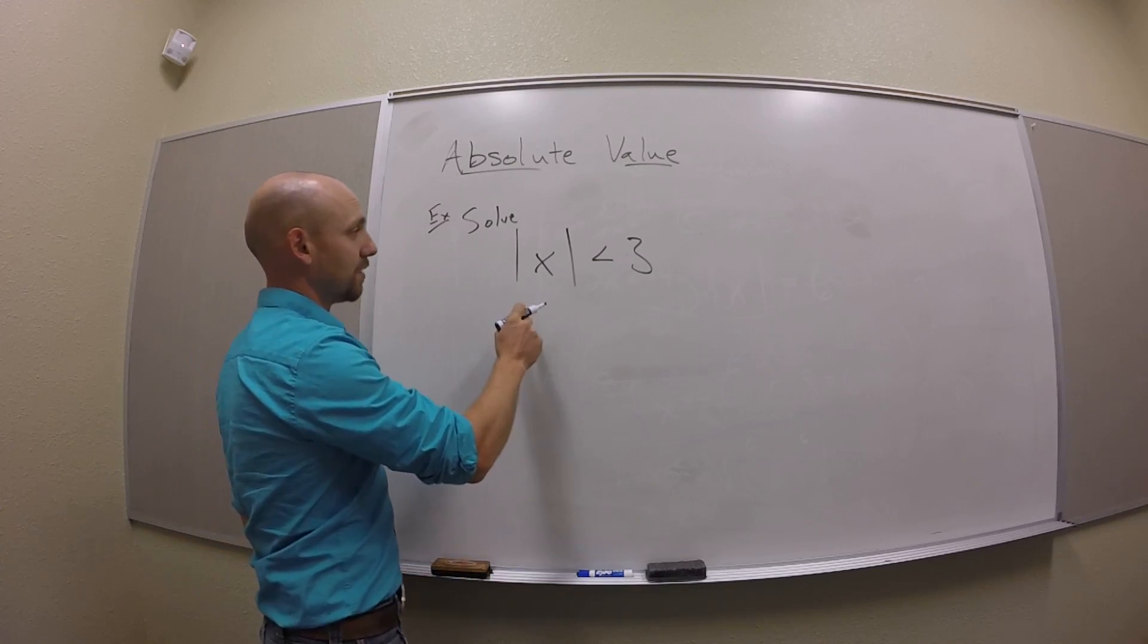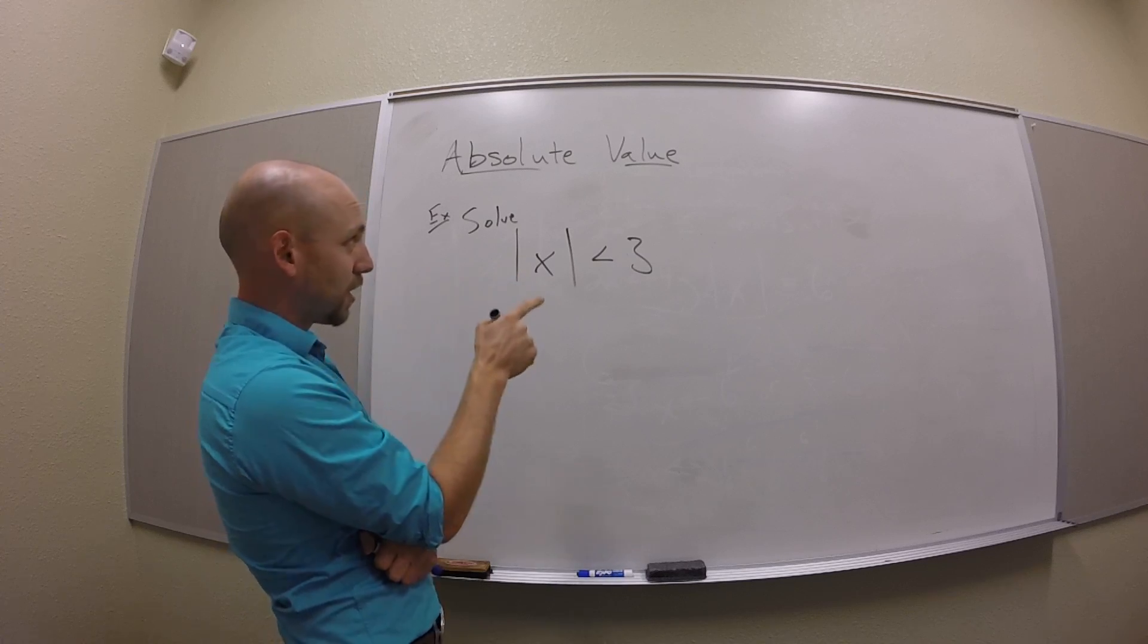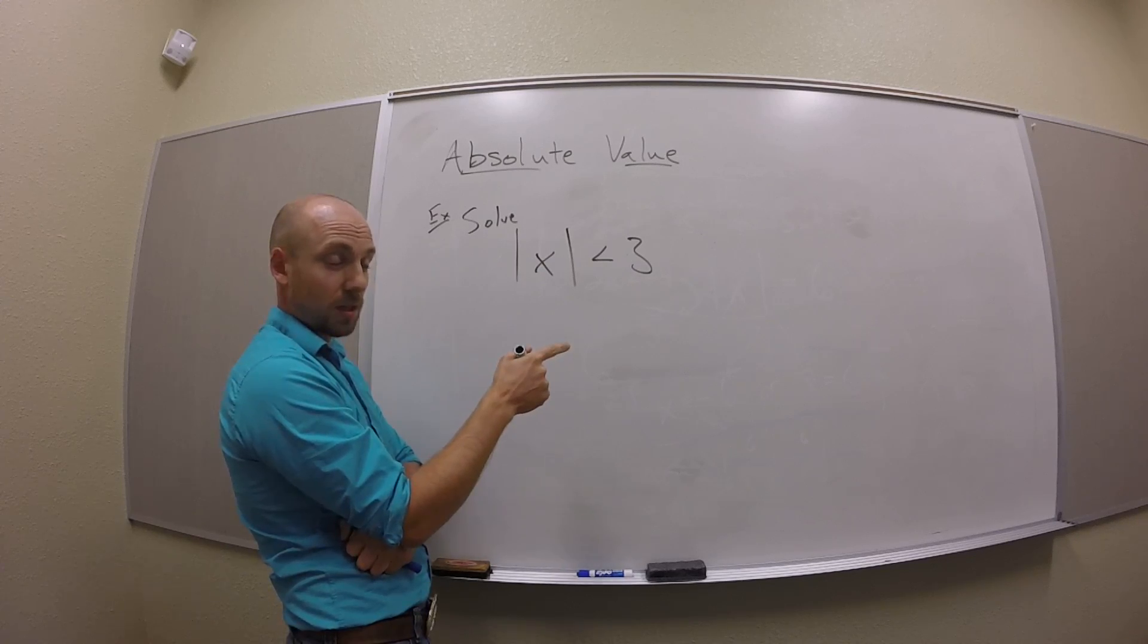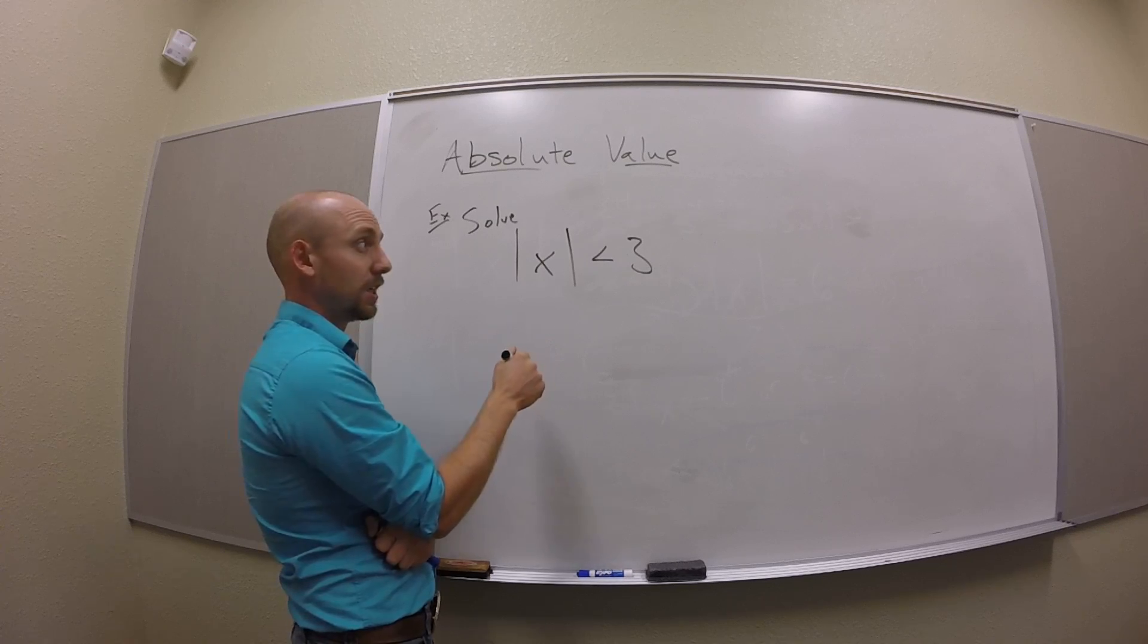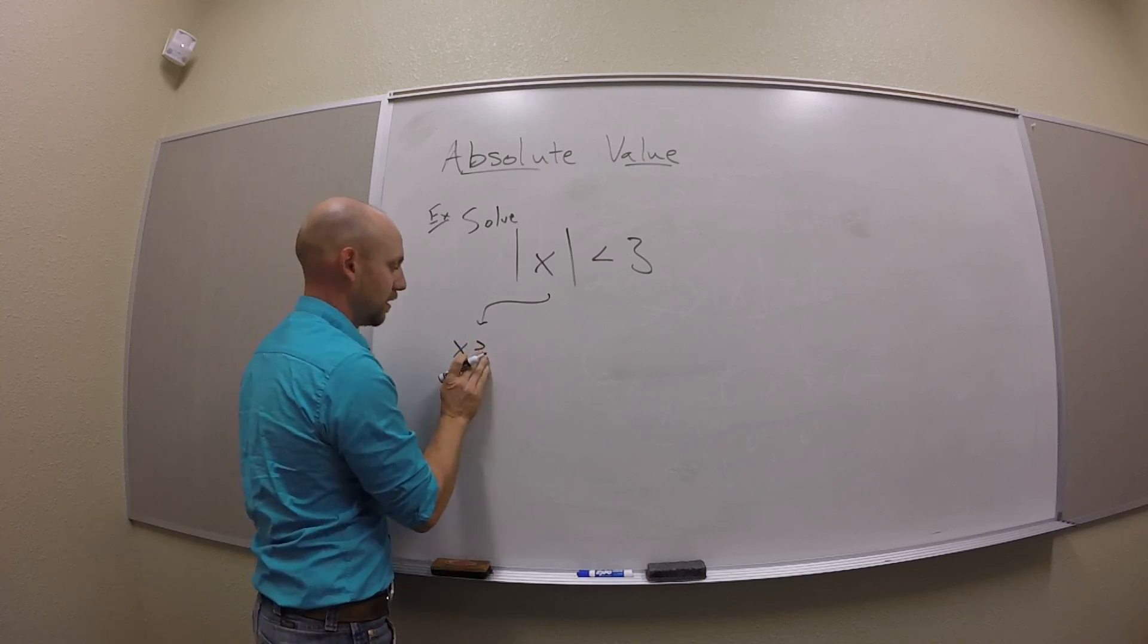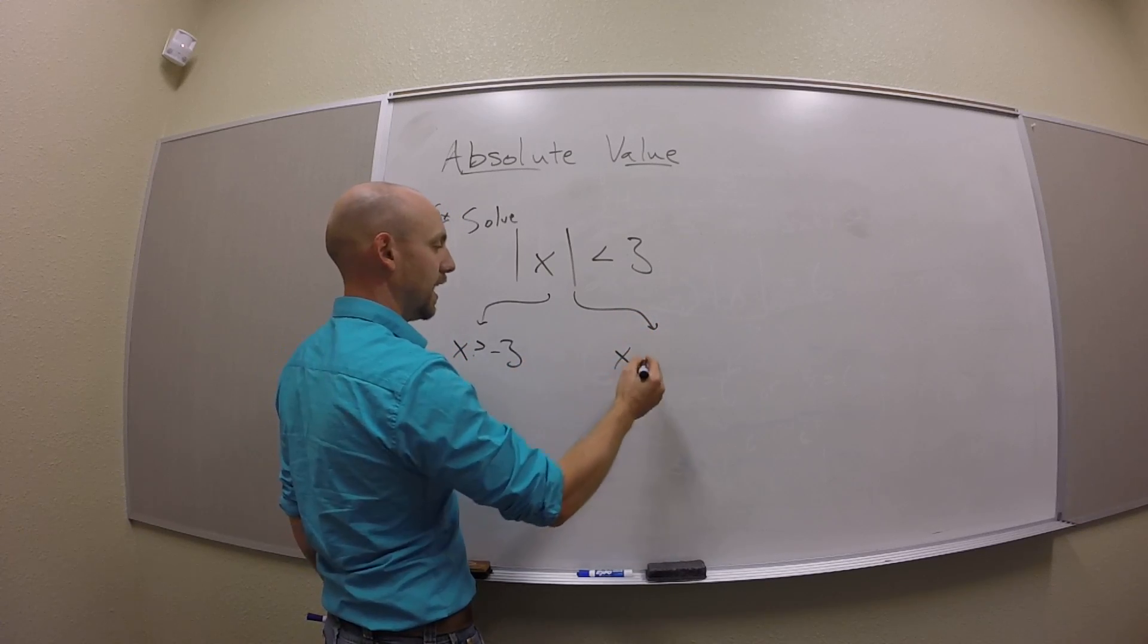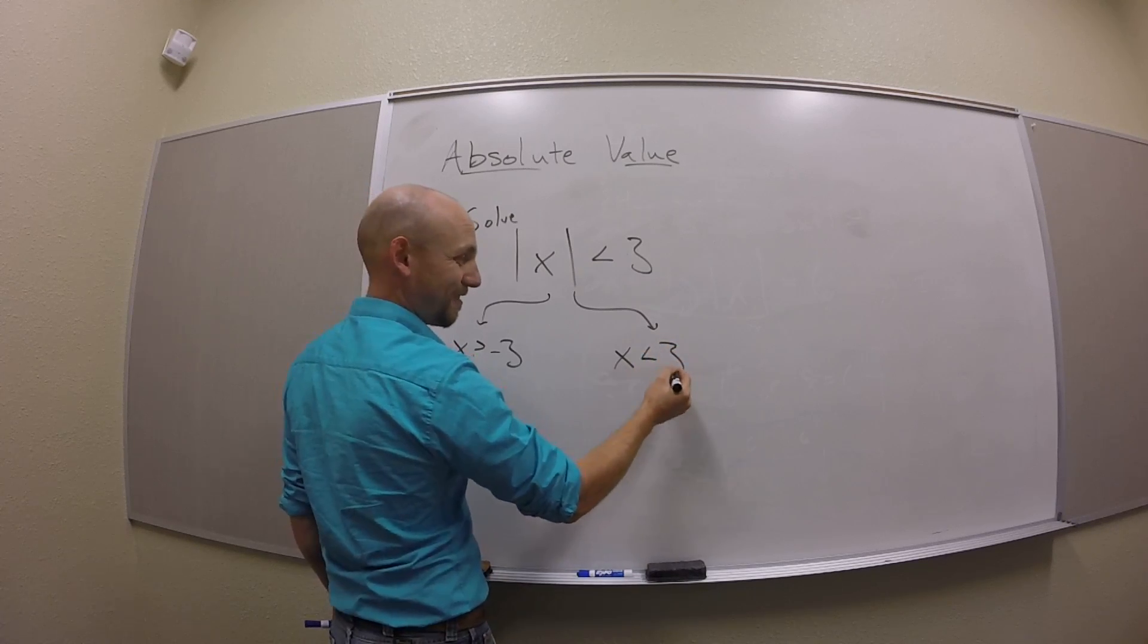So I'm going to think to myself, if the absolute value of x is less than 3, that means it's closer to 0 than 3 is. So that either means on the one hand, x is bigger than negative 3, and on the other hand, x is smaller than regular 3.